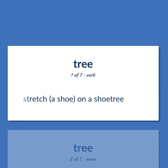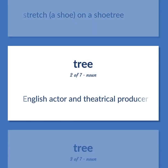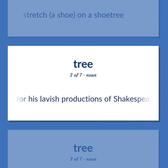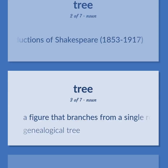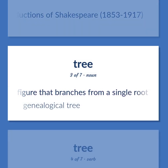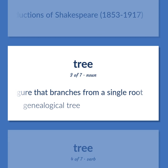Stretch a shoe on a shoe tree. English actor and theatrical producer noted for his lavish productions of Shakespeare, 1853 to 1917. A figure that branches from a single root. Genealogical tree.